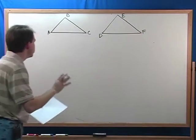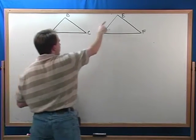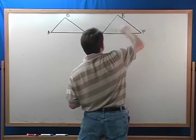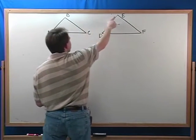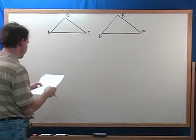First of all, we say that these triangles are congruent if all of these sides are exactly the same length as these sides, and if all of these corresponding angles are exactly congruent or equal to one another.